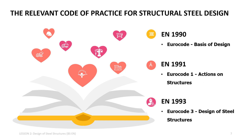There are only 3 Eurocodes used in design of steel structures, namely Eurocode 0, Eurocode 1, and Eurocode 3.